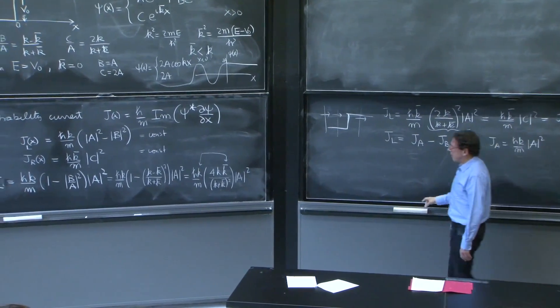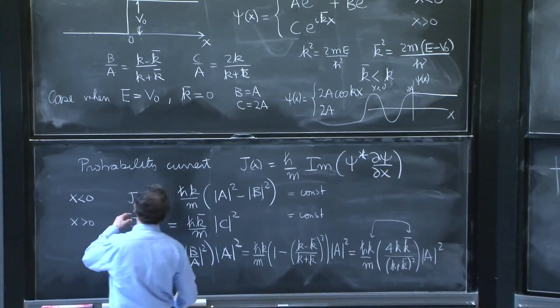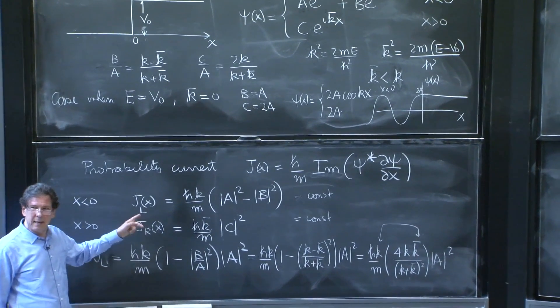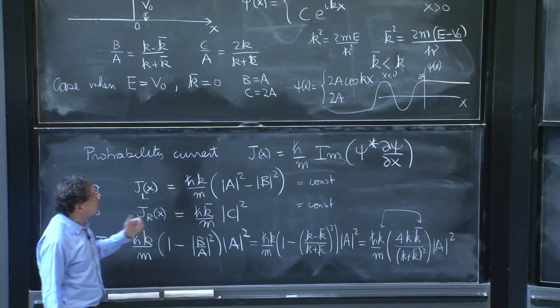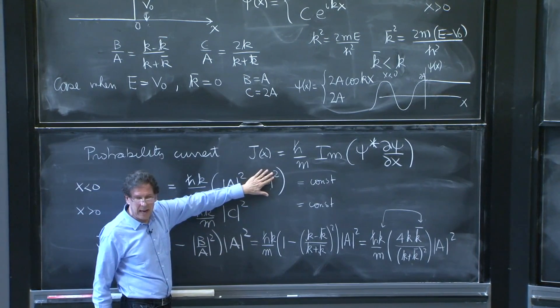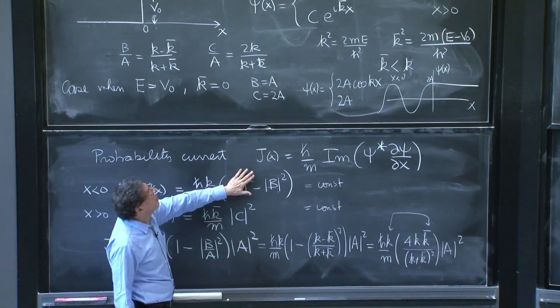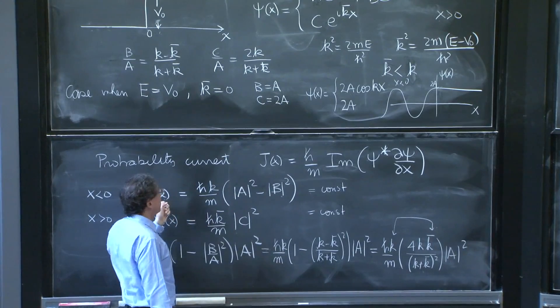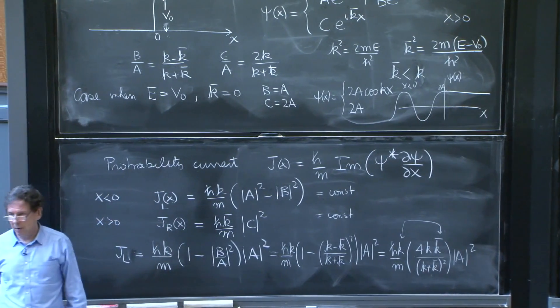You see, the current that exists to the left of the barrier has two components, and it's very intuitive. It's the current that would have been brought alone by the incoming a wave minus the current that would have existed alone from the reflected b wave. b is the reflected wave.